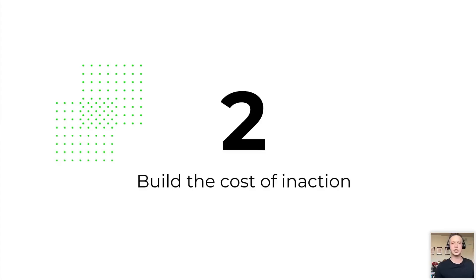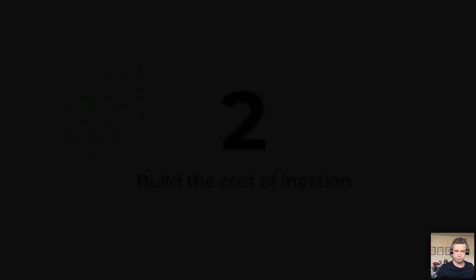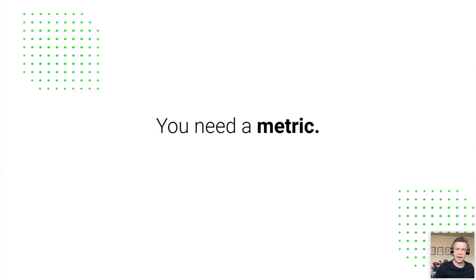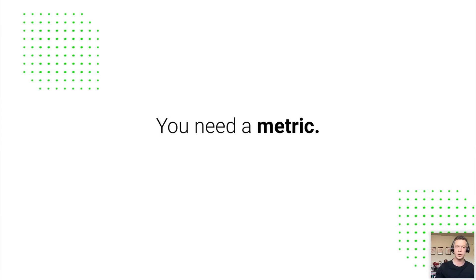Once you've peeled back the onion, your job is to now build the cost of inaction. You need a metric to anchor to. Peeling back the onion to the core in that first step does not always lead to a metric, but it usually does. In the event that it doesn't, you still need to dig and find a metric so that you can justify the purchase — but more importantly, open your customer's eyes to the cost of doing nothing, which starts with finding a metric that is suffering as a result of the problem you're solving, so that you can start to quantify it.